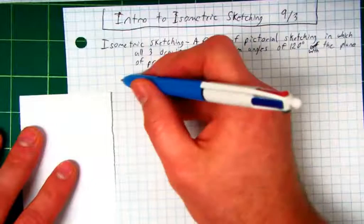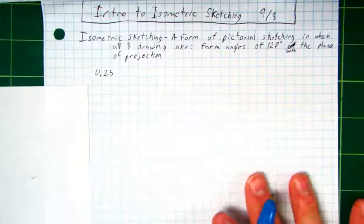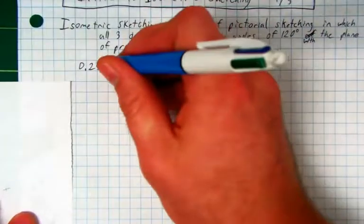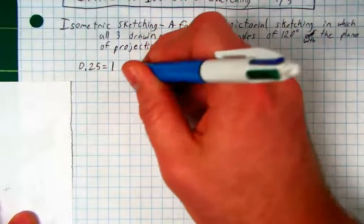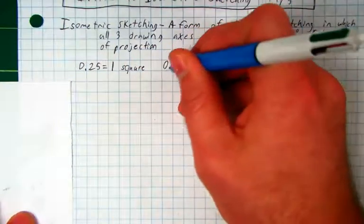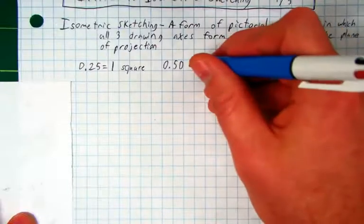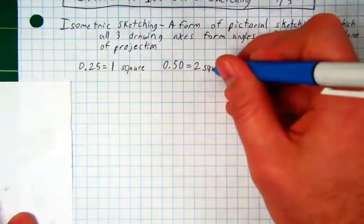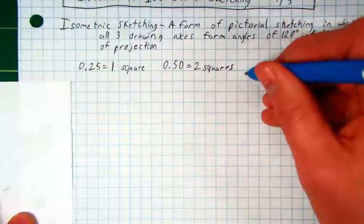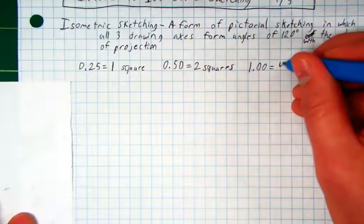When you see a measurement of 0.25 on isometric drawings, that is equal to one square. So what would 0.50 be? How many squares would that be? Shout it out. Two squares. Thank you. And then, of course, what would 1.00, or a measurement of one, equal? Four squares.